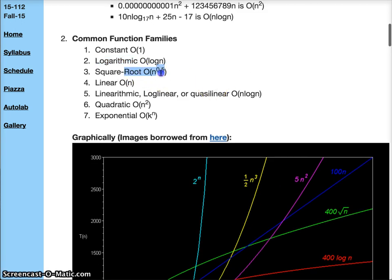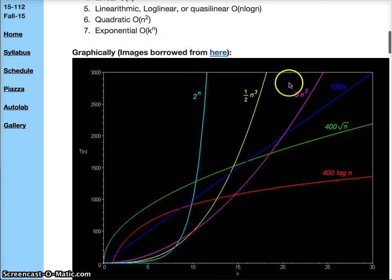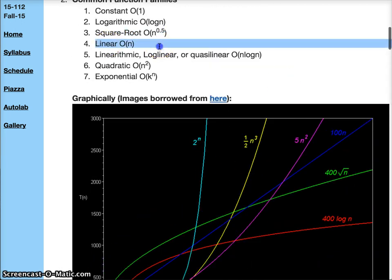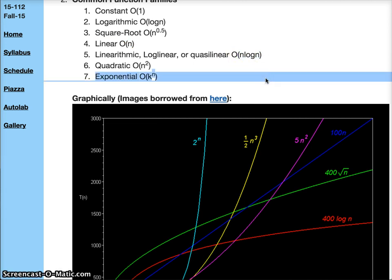We have the square root, which is as you expect the square root function. We have linear, which is O(N). Another one which is popular is linearithmic or log linear, which is N log N, and this is one that we end up seeing a lot in computer science.